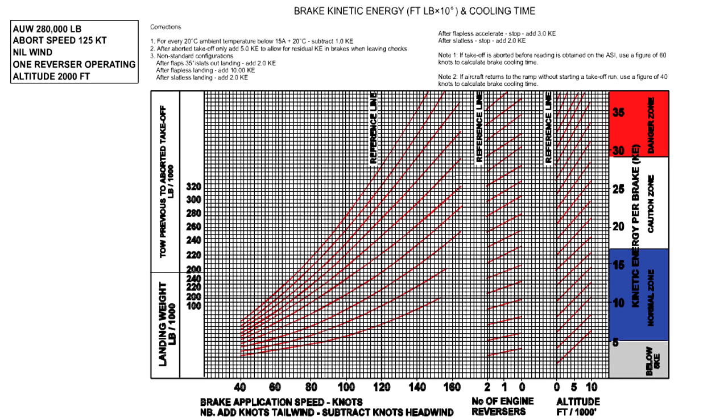As an example, we will use an aborted take-off at a weight of 280,000 pounds, stopping from a speed of 125 knots with no wind and one reverser operating at an airfield with a pressure altitude of 2,000 feet. The graph is entered with the weight 280,000 pounds. We move across to the reference line, then up the guide lines until the 125 knot line is intercepted. We then move across to the reverser's reference line and up to intercept the one reverser operating point. We now move across to the altitude reference line, then up to intercept the 2,000 feet point. Finally, we move to the right to read off the brake kinetic energy absorbed.